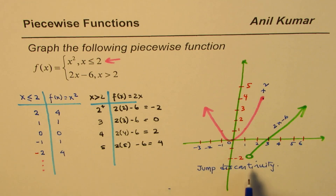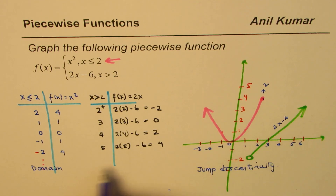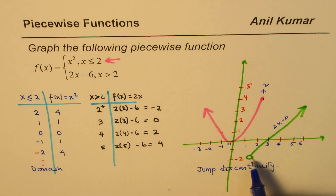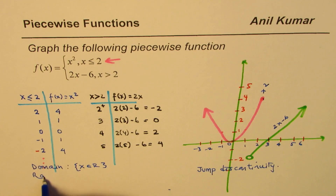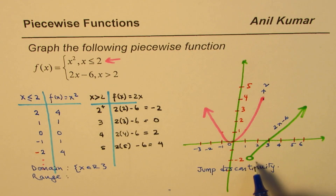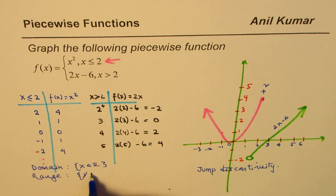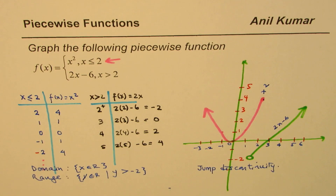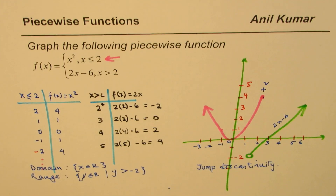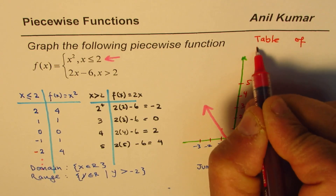Let us also write the domain and range of this function. The domain is x belongs to all real numbers. The range of this function is always greater than minus 2, so y belongs to real numbers where y is greater than minus 2. Note it is not equal to minus 2.